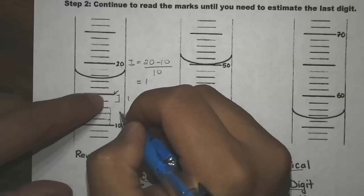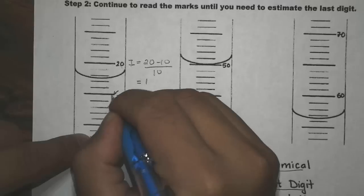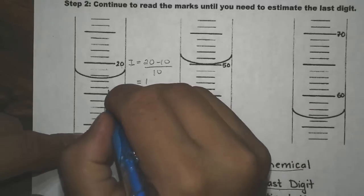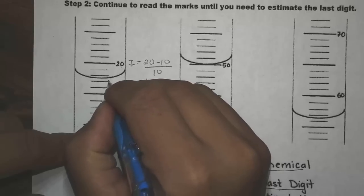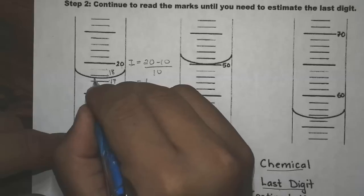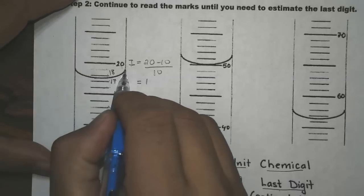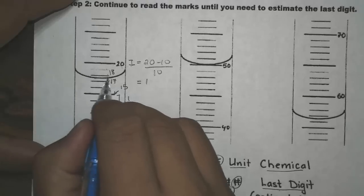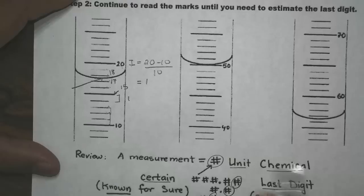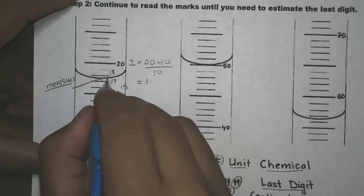So the marks must equal 10, 11, 12, 13, 14, 15, 16, 17, 18. This is where our reading is. Notice how the reading has a curved shape — the meniscus. When we read the volume of a liquid, we read at the meniscus level, at the bottom part of the curve.